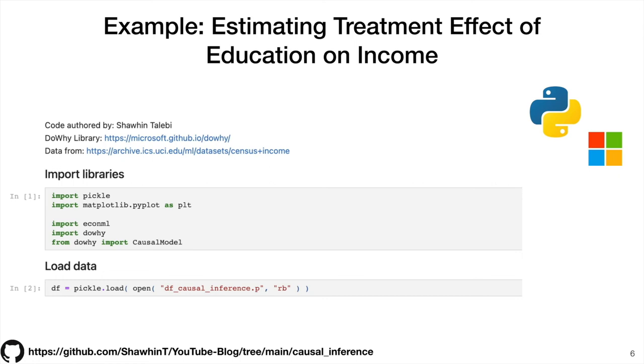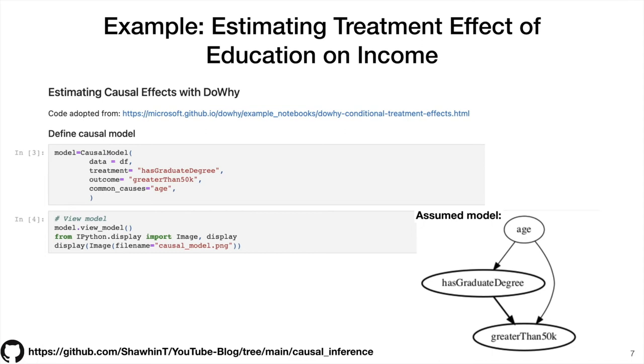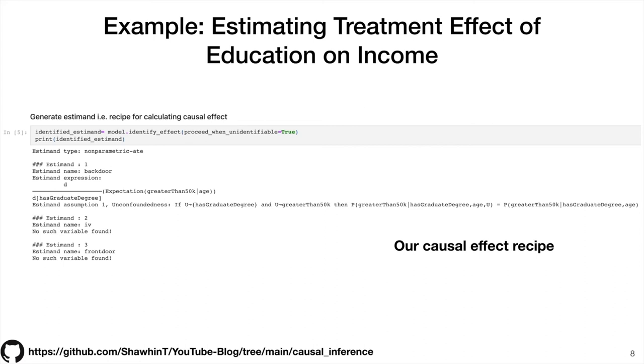The example code is at the GitHub linked at the bottom here. I'll also put the link in the description. Basically here, we're going to estimate the treatment effect of education on income. First, we import some libraries and load some data. This is real census data from the UCI, University of California Irvine, machine learning data repository. To do the causal effect calculation, I use the DoWhy library, which is a Microsoft library for doing causal inference. The next step is we have to define our causal model. Again, the starting point of all causal inference is a causal model. We need to start with our DAG, which is the same as we saw in an earlier slide, just that education now has a new name called has_graduate_degree and income has a different name, which is greater_than_50k. These are both Boolean variables, which means they're true or false variables. Either someone can have a graduate degree or they don't, or either they make more than $50,000 a year or they don't. Age is just an integer. Next, we need an estimate, which is basically a recipe for estimating our causal effect. You can do this in one line using the DoWhy library. And then finally, we can estimate the causal effect.